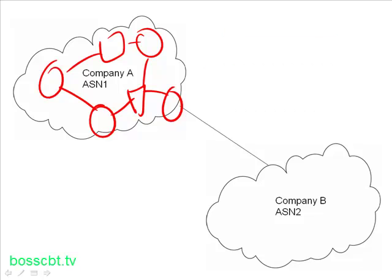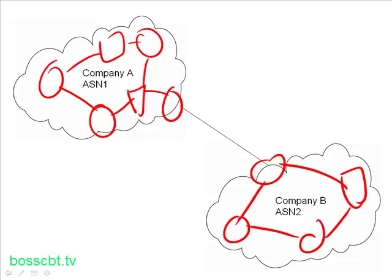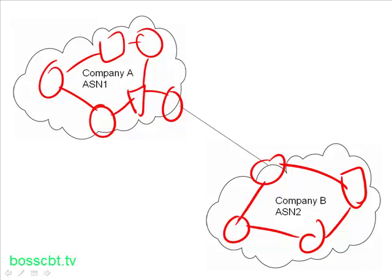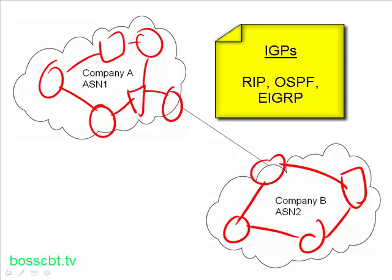The same thing happens at Company B — they've got their own equipment as well. They also have their own autonomous system because they're a different network, independent from Company A and everyone else. So they're considered an autonomous system with their own number — ASN 2. Inside each company, they're running routing protocols from the category of IGP — Interior Gateway Protocols — which could include RIP, OSPF, and EIGRP, so that all their routers and switches can exchange routing information.